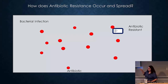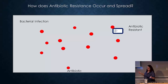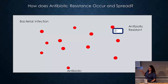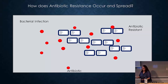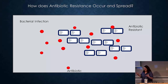That resistant bacteria doesn't care if it has an antibiotic or not. Essentially it ignores it. What happens then is everybody else is killed off, but this resistant one will start to grow and divide, making more and more, and the infection comes back. That's the essential concept of antibiotic resistance.